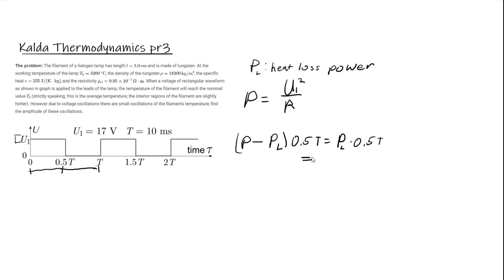So P minus P sub L times 0.5 T has to be equal to P sub L times 0.5 T.